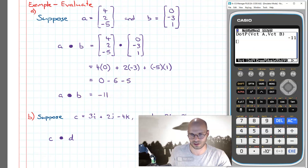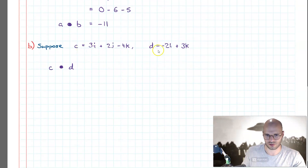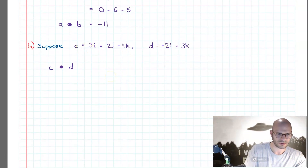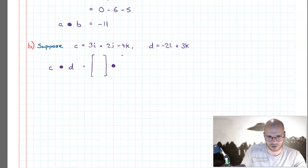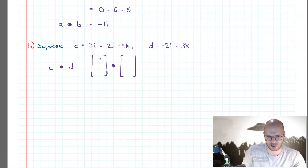Now let's have a look at a slightly more convoluted question. The mathematics is still the same, however the presentation is slightly more vexing. We are in the ijk representation here for a vector. I need to put this in a form my calculator will accept, which is a column vector. So I'll go three, two, minus four for ijk, and then for the second vector I've got i missing j, and a k, so I go minus two, missing j, then k.